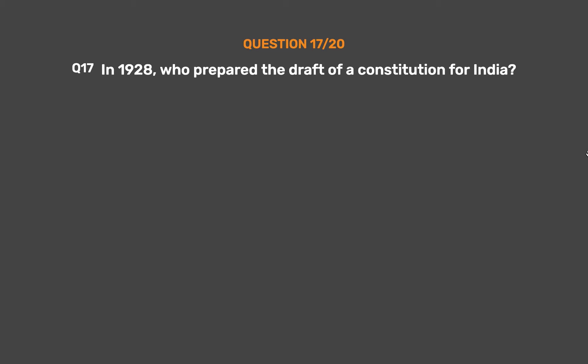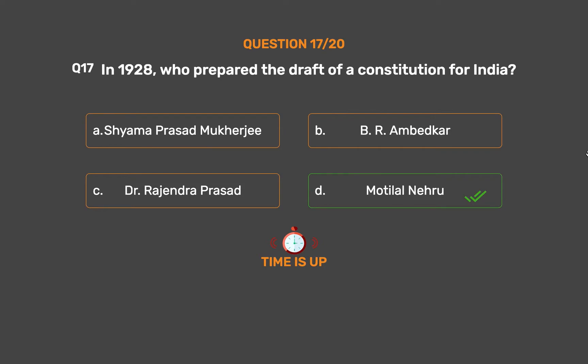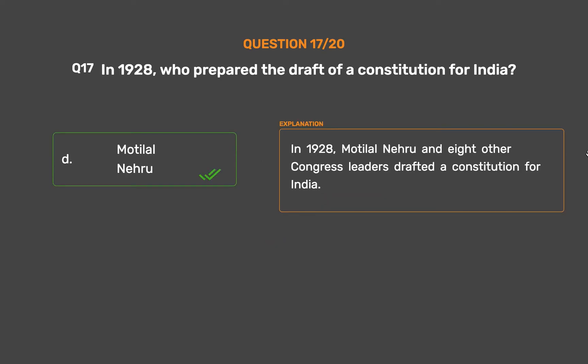Question 17: In 1928, who prepared the draft of a constitution for India? Option A: Shyama Prasad Mukherjee. Option B: B. R. Ambedkar. Option C: Dr. Rajendra Prasad. Option D: Motilal Nehru. The correct answer is Option D: Motilal Nehru. In 1928, Motilal Nehru and eight other Congress leaders drafted a constitution for India.